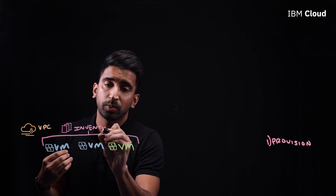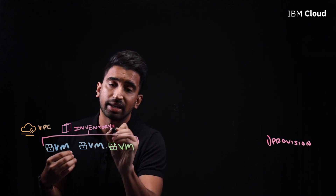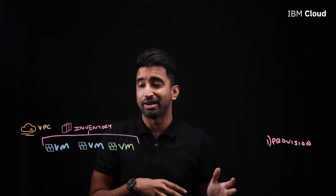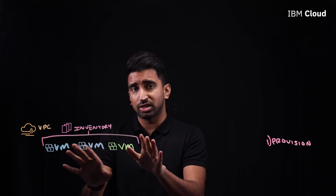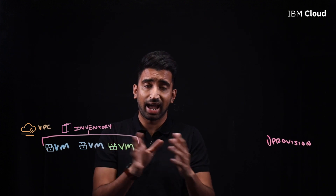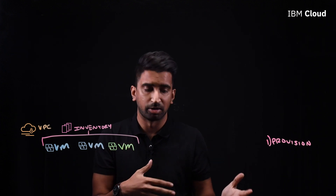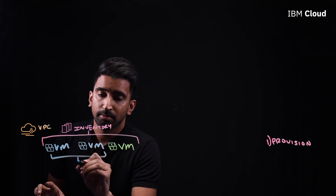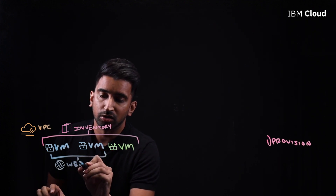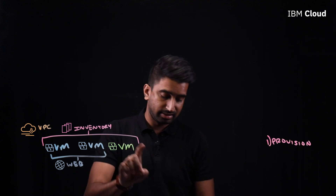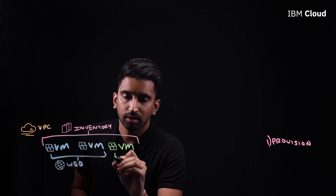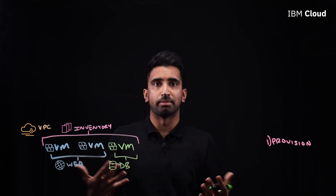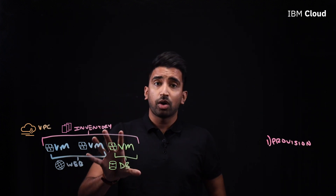Within this inventory we can create sub-categorizations — Ansible calls these patterns. Let's say these virtual machines have different underlying tasks and services they're going to be running. The first two virtual machines we'll call 'web' because they'll be used for web servers, and the last one we'll call 'DB' because we're going to run a MySQL database on it.